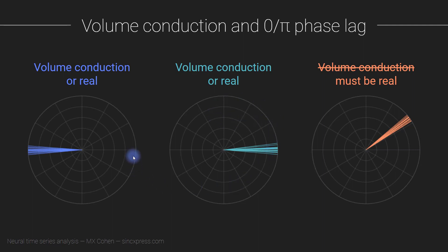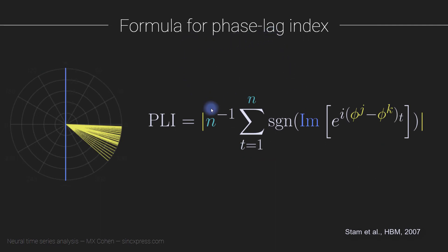By now you should have an idea of why volume conduction predicts a phase lag of zero or pi, and why it can be useful to ignore synchronization with these phase lags. Now I'm going to show you the formula for the phase lag index. When you first see it, it might look intimidating, but it's actually pretty straightforward and intuitive. First, I want to point out the similarity between this formula and the formula for inter-site phase clustering.